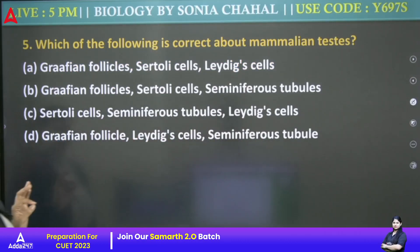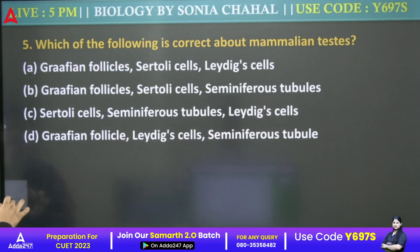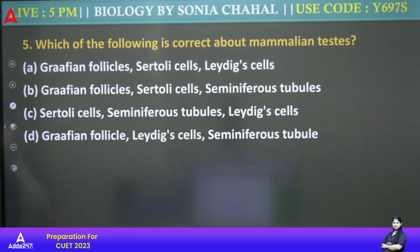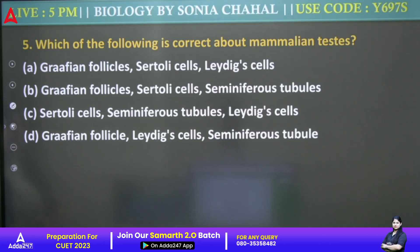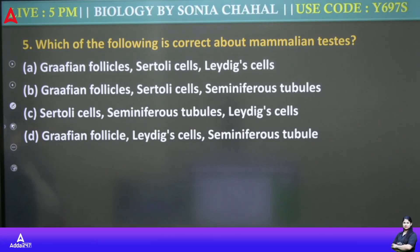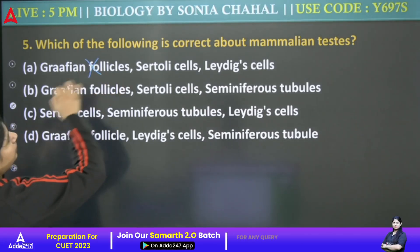Next: Which of the following is correct about mammalian testes? The options include Graafian follicles, Sertoli cells and Leydig cells. If you look at mammalian testes — Graafian follicles are female structures, so that is wrong.